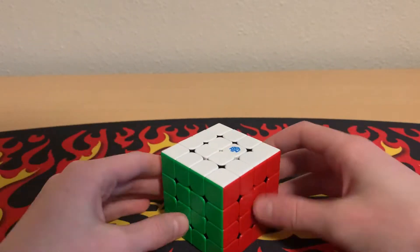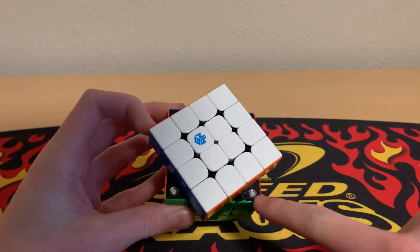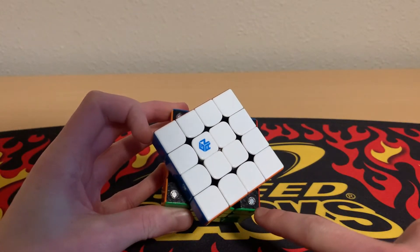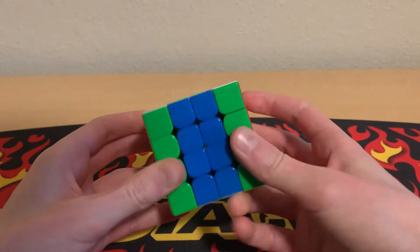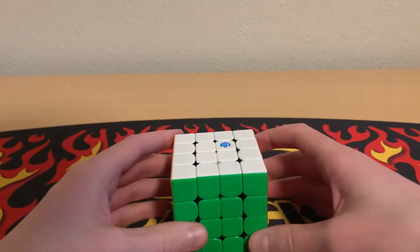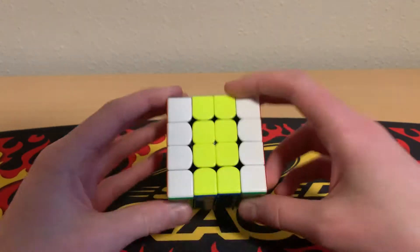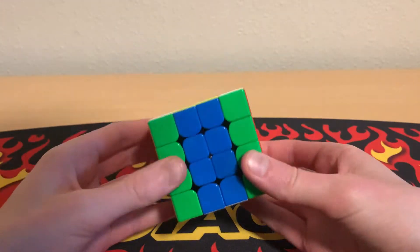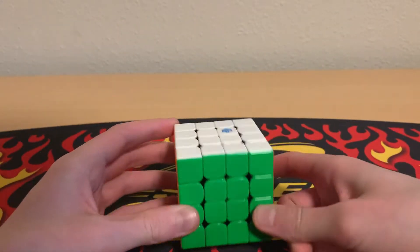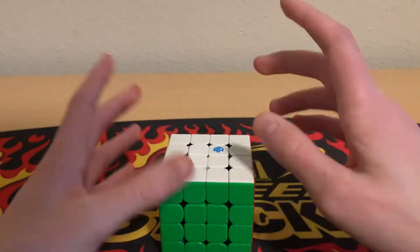You can use Roux on big cubes, but getting a big cube with magnets is very important because Roux uses M moves a lot. With a 4x4 without magnets, M moves suck and are awful. So to be good at Roux on 4x4 or 5x5, get one of those cubes with magnets. That's crucial.